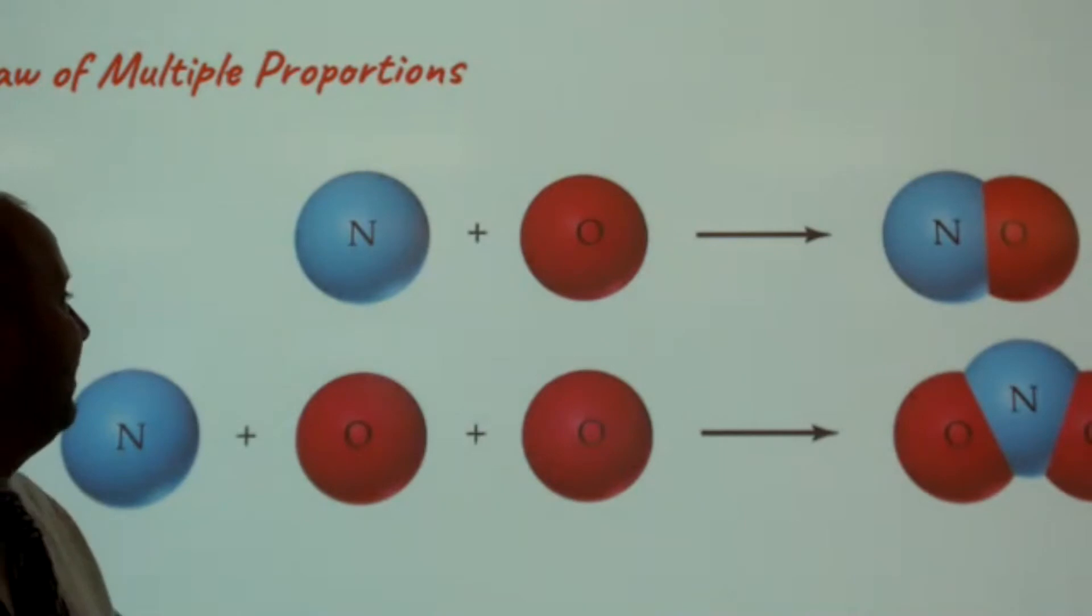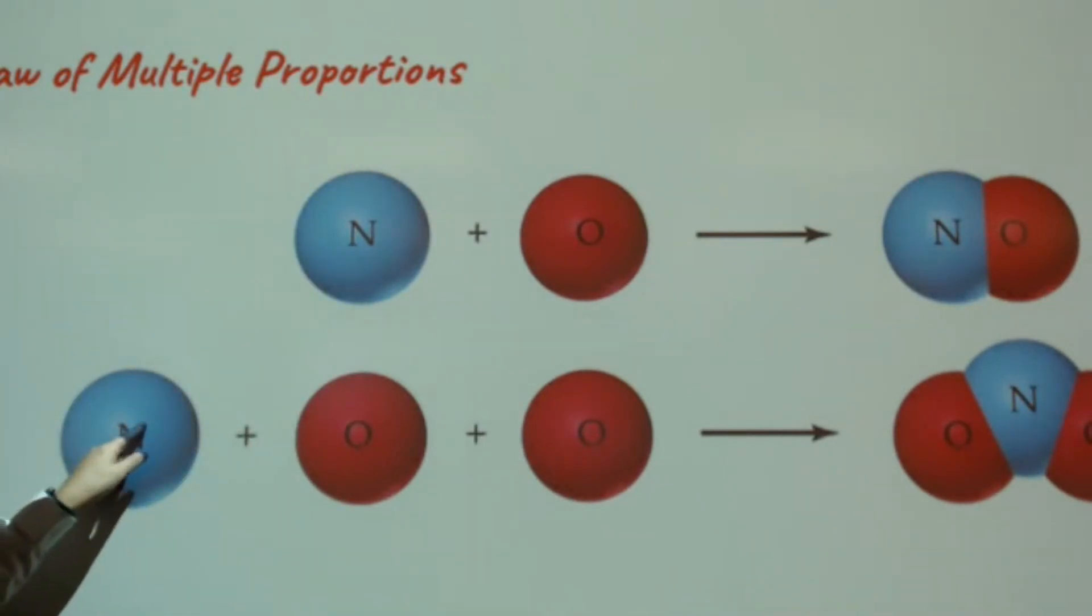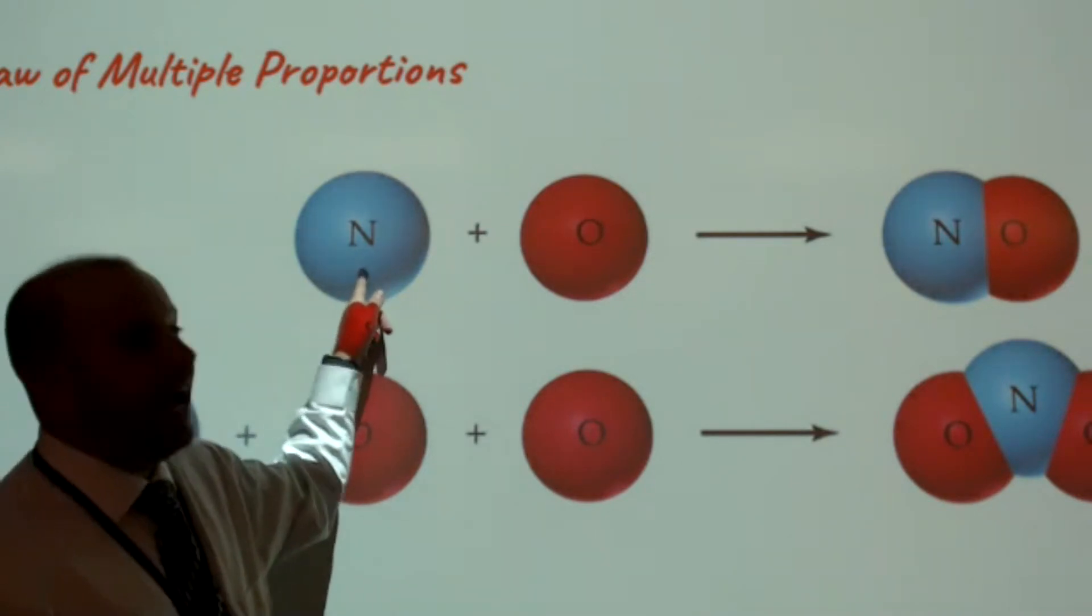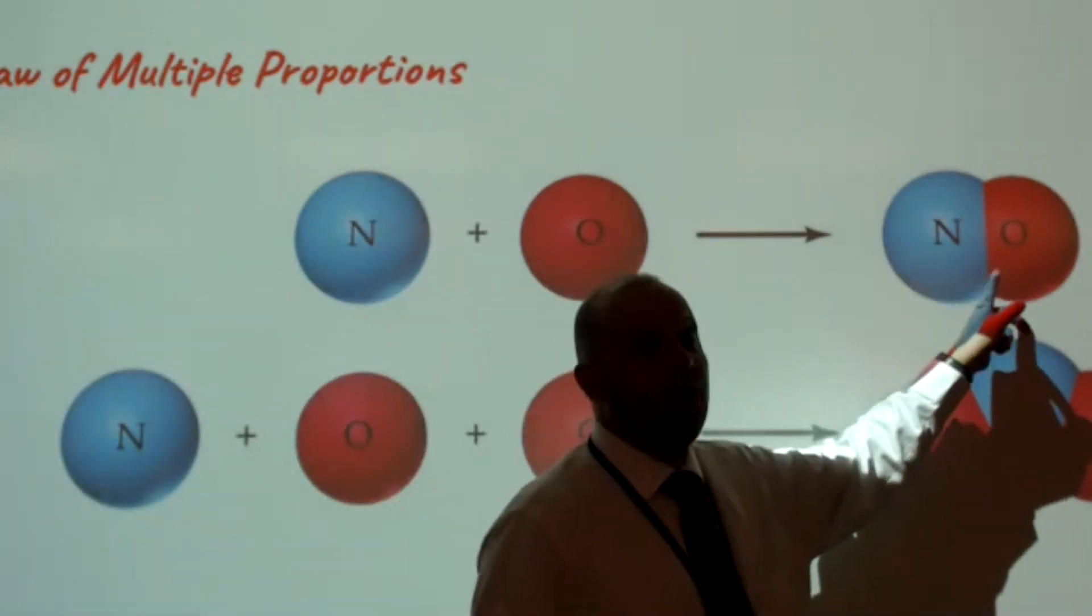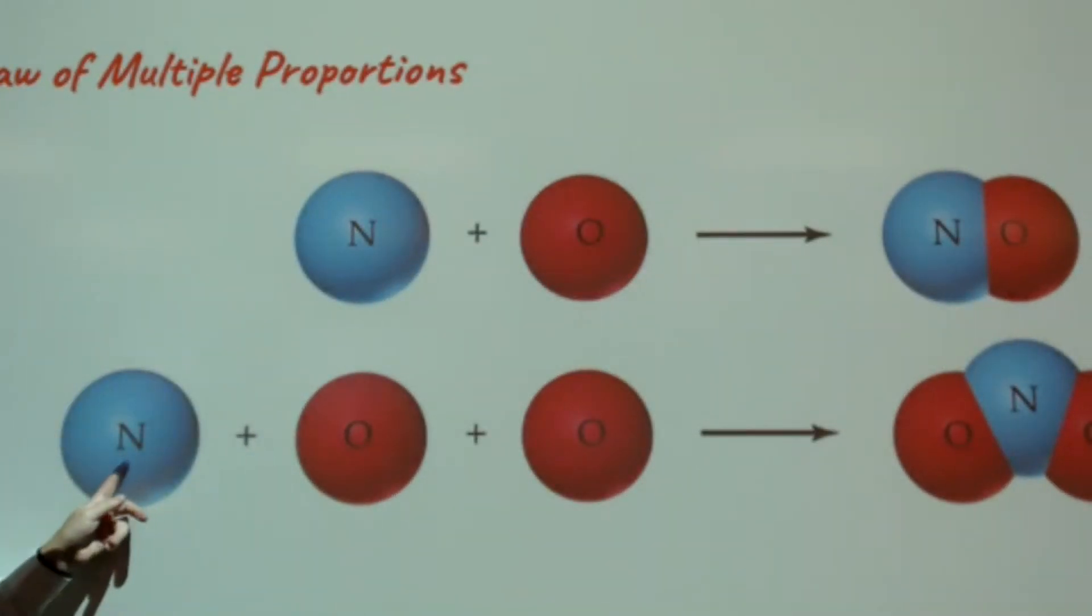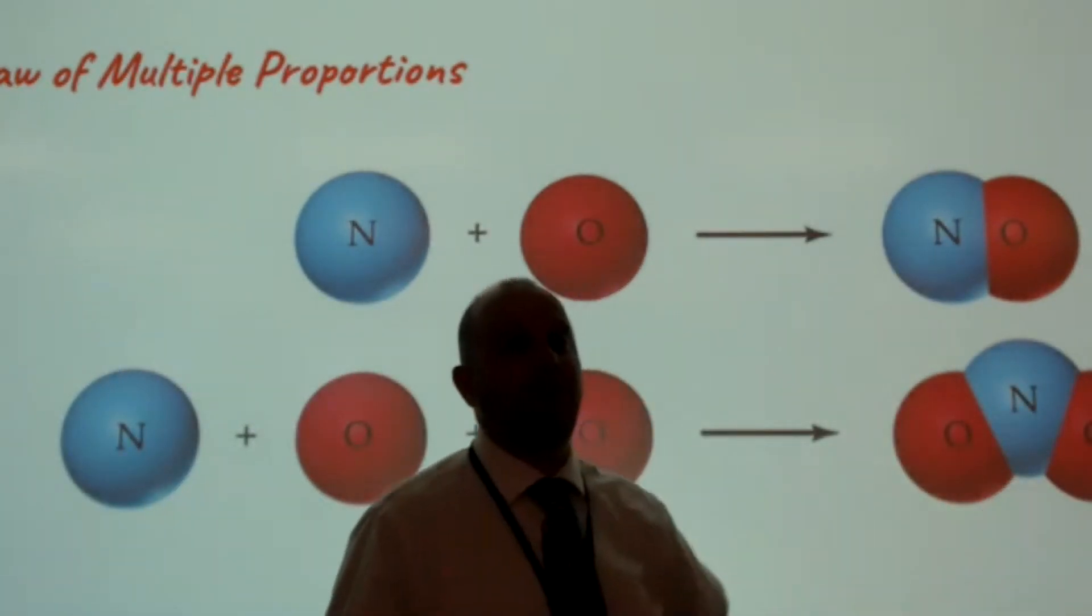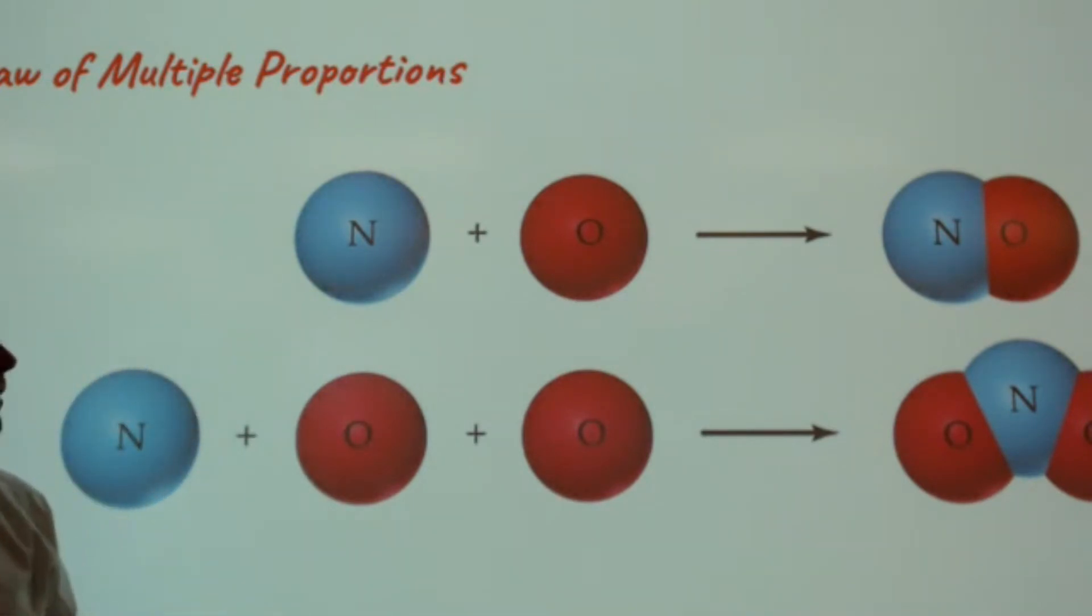So if we take a look at this, our fixed mass is nitrogen in this example. So here we have a nitrogen atom combining with an oxygen atom to form this molecule, nitrogen monoxide. We can also have a nitrogen atom combined with two oxygen atoms and form nitrogen dioxide. The purpose of this is saying that atoms can form with different ratios, but they're always whole number ratios. So you're not going to get a quarter of an oxygen or three quarters of a nitrogen atom. They combine in small whole number ratios.